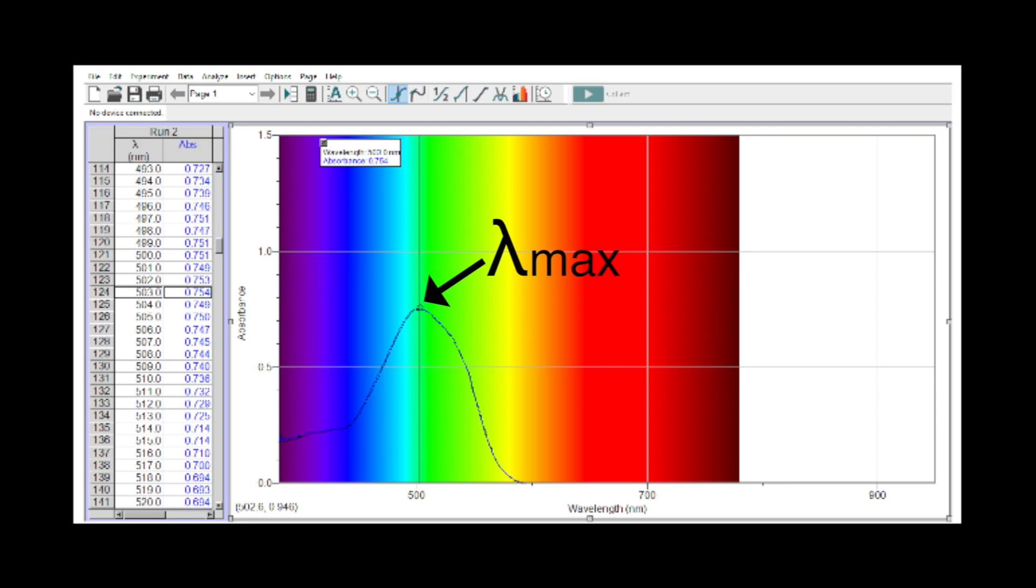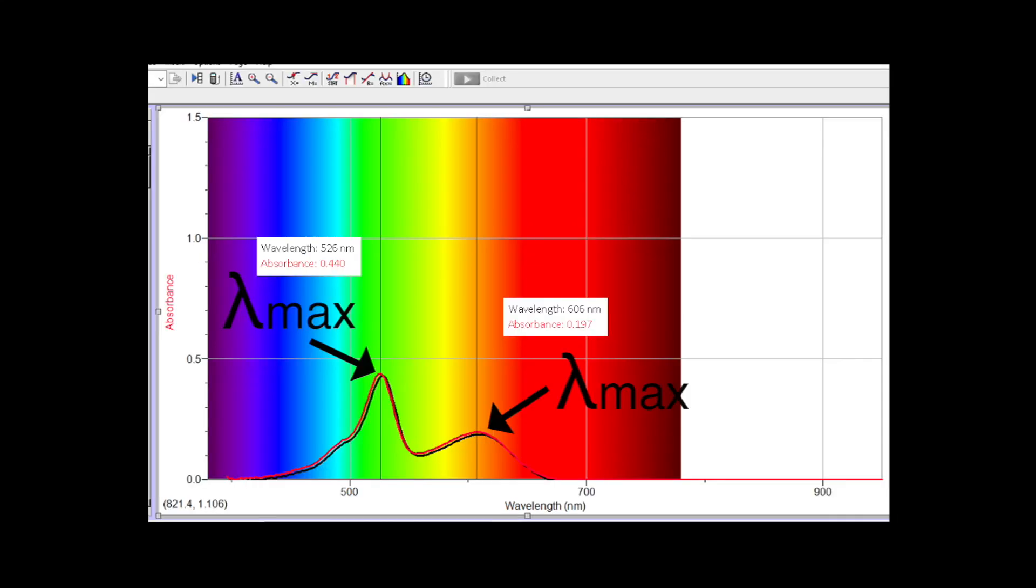Most often, Beer's Law is applied using the wavelength of maximum absorbance of a chemical species known as lambda max. When more than one species is present in solution, more than one lambda max value will be present, one for each species.